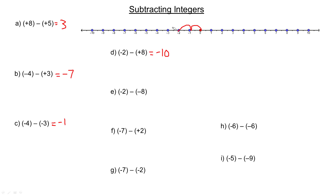In example E, we've still got negative 2, but instead of subtracting 8, we're going to subtract negative 8. So instead of going 8 to the left, we'd actually be going 8 to the right, and we end up at positive 6. Subtracting a positive amount means going to the left, but if you're subtracting a negative, you end up going to the right — it has to be the opposite direction.